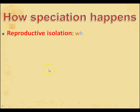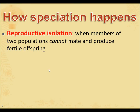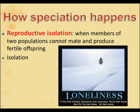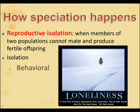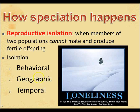Here's how speciation happens. You need to have what is called reproductive isolation — that's when members of two populations can't mate and produce fertile offspring; they are isolated from each other reproductively. Isolation simply means that they are separated, and there are a couple of different ways that you can be separated: one is by behavior, one is by geography, and one is by time.